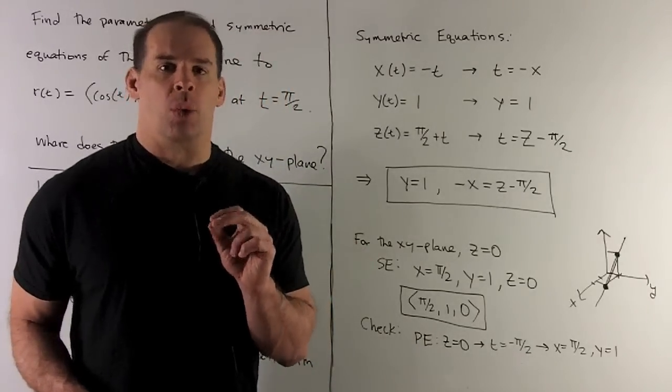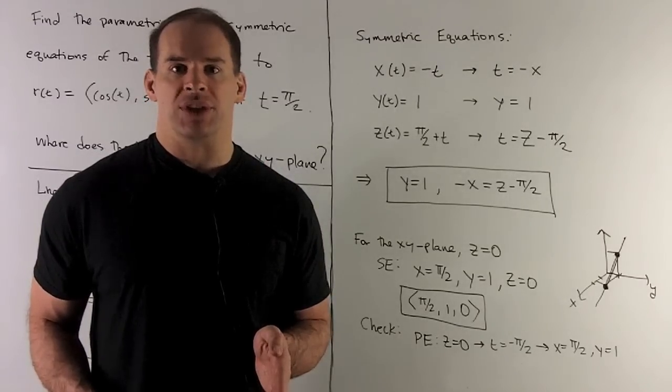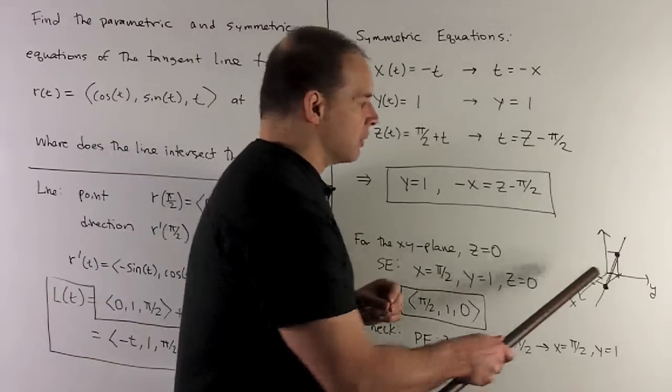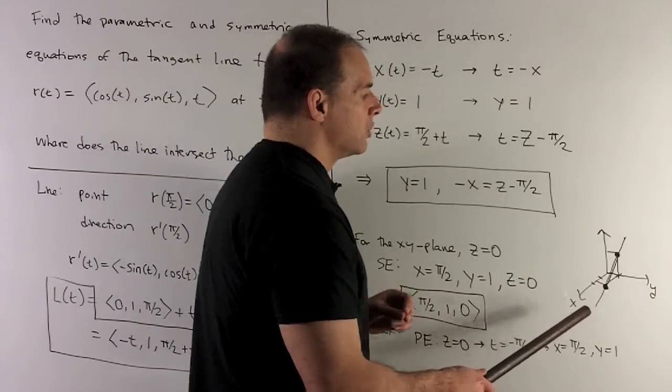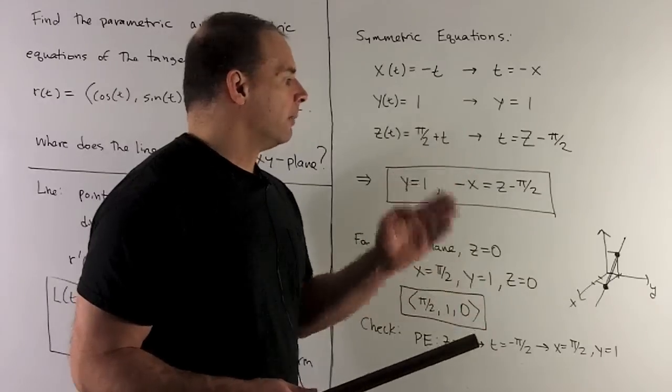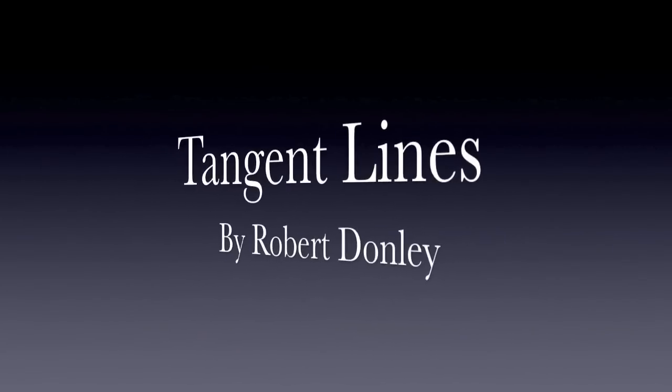Now, what's going on with y = 1? What's happening here is y is always 1 no matter what you put in for t. So that means our line is going to be stuck in the plane defined by y = 1. That plane is going to be parallel to the xz-plane.